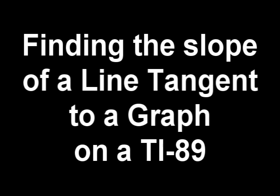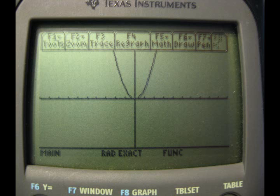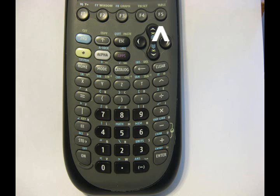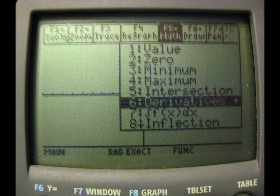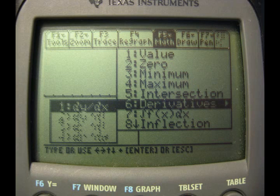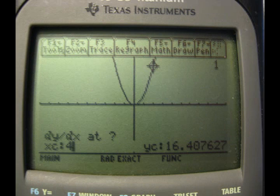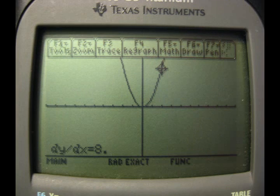To find the slope of the tangent line on a graph, go to your graph, and then press F5, and then scroll down to number 6, where it says derivatives, and then press the right arrow key, and select dy, dx, and then plug your point in, and it'll find the slope of the tangent line at that particular point.